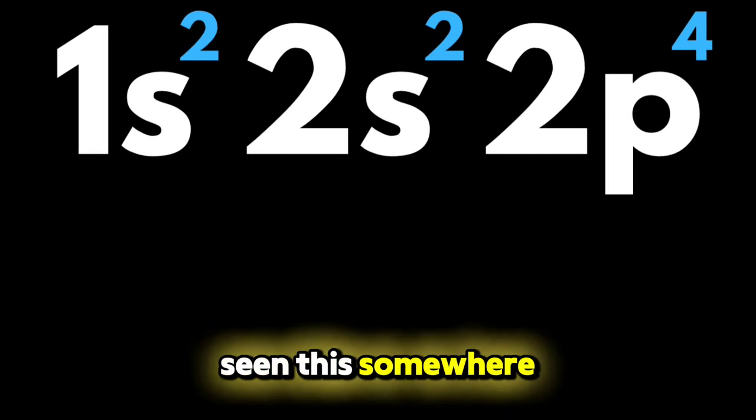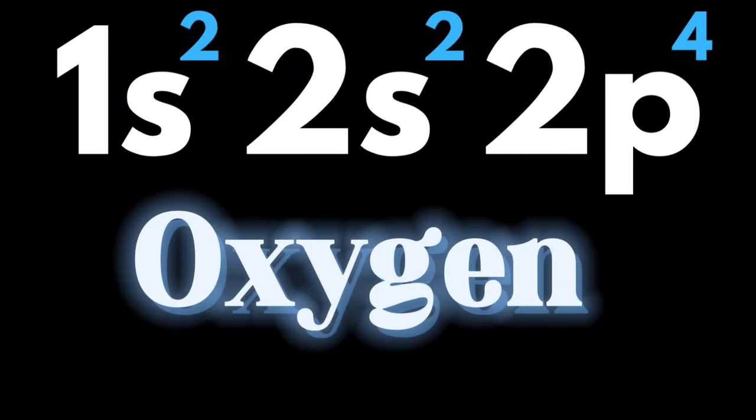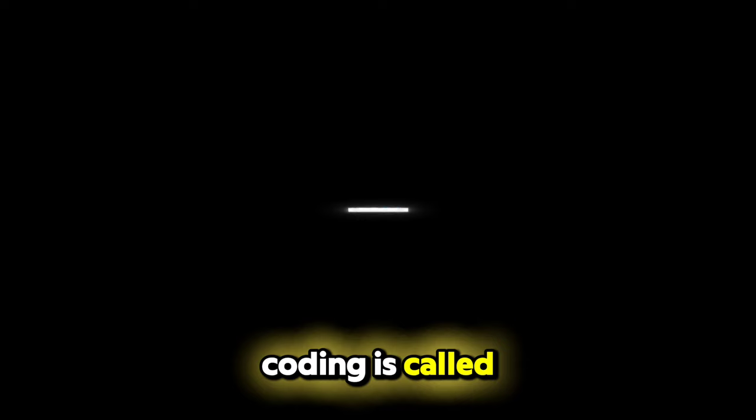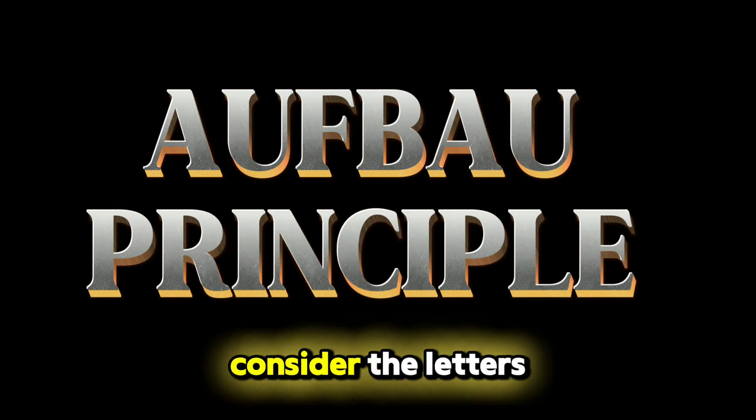Probably you've seen this somewhere. Well, this is oxygen. This sort of coding is called the Aufbau principle. Consider the letters s, p, d, f as containers. S can take two electrons, p can store six electrons, d can store 10 electrons, and f can store 14 electrons.